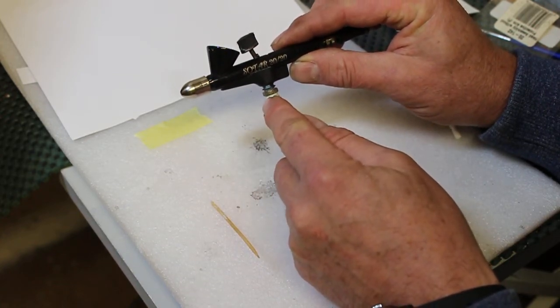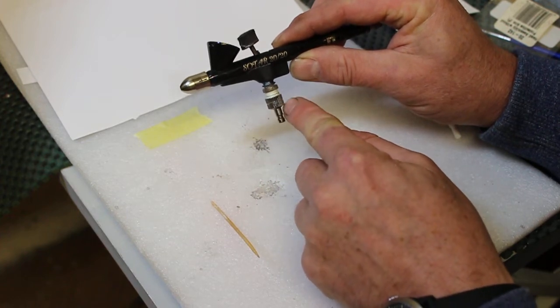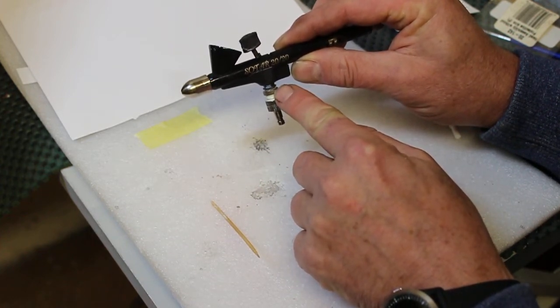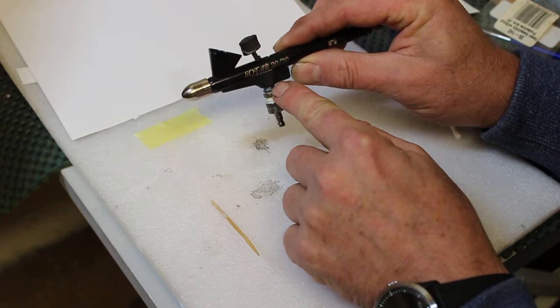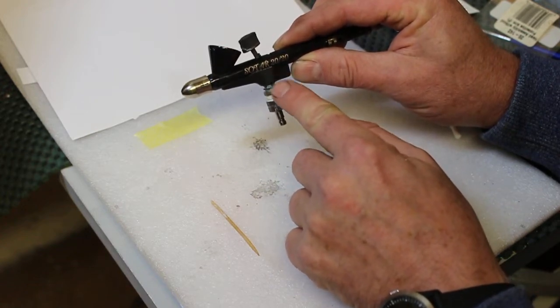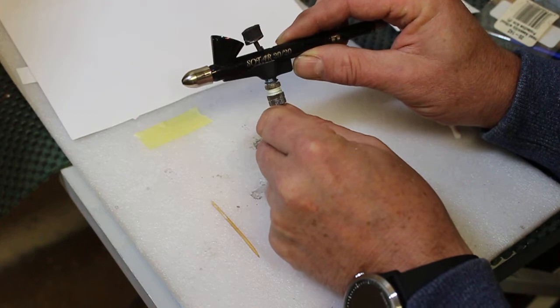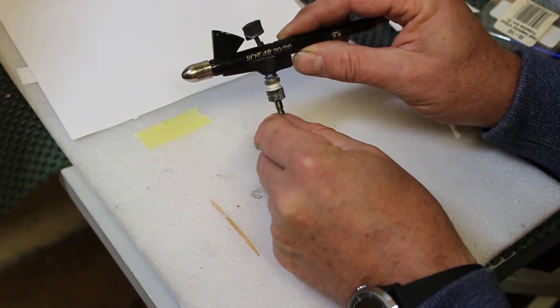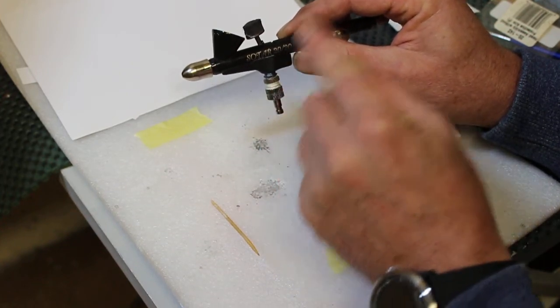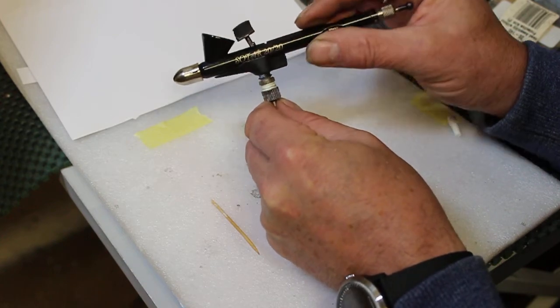We've just got a quick disconnect onto an adapter which goes to the Badger. So we've got the Badger airbrush, the adapter which takes the Iwata quick disconnect, and then that can go onto the air hose.